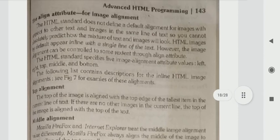Today we are going to start from the align attribute for image alignment. This is the align attribute. The HTML standard does not define a default alignment for images with respect to other text and images in the same line of text, so you cannot absolutely predict how the mixture of text and images will look.